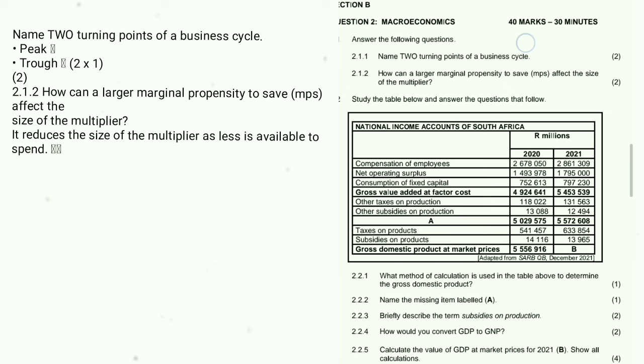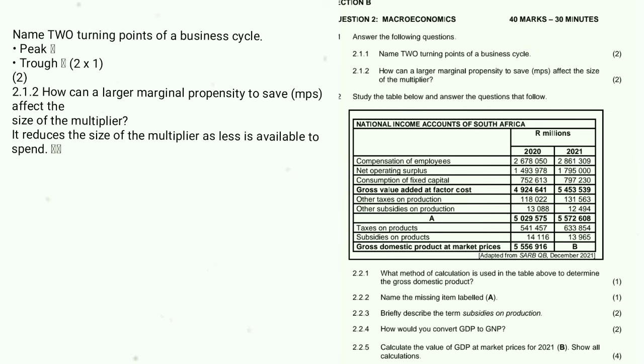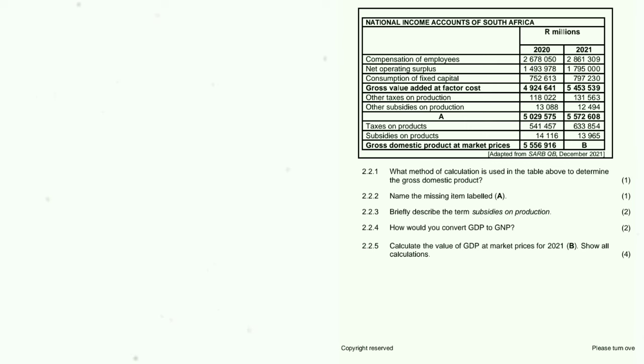Section B, Question 2 — Microeconomics. We are going to pick Question 2. 2.1.1: Name any two turning points of the business cycle — peak and trough. 2.1.2: How can a larger marginal propensity to save (MPS) affect the size of the multiplier? It reduces the size of the multiplier as less is available to spend.